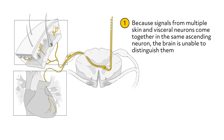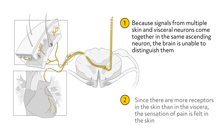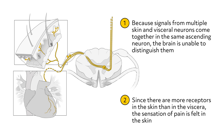Because signals from multiple skin and visceral neurons come together in the same ascending neuron, the brain is unable to distinguish them. Since there are more receptors in the skin than in the viscera, the sensation of pain is felt in the skin.